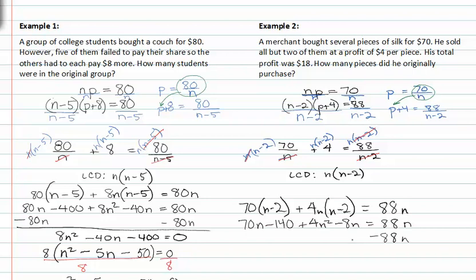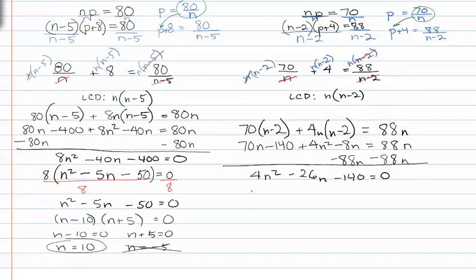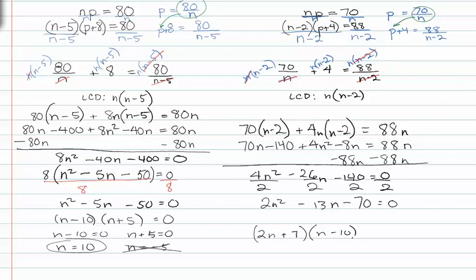Subtracting eighty-eight n from both sides, this gives me 4n squared minus 26n minus 140 equals zero in order of descending exponents. Dividing by two all the way through gives us 2n squared minus 13n minus 70 equals zero. My factors are 2n plus 7 times n minus 10 equals zero,